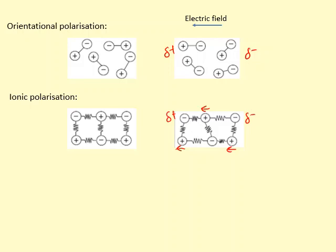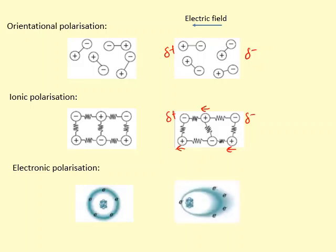Another one is electronic polarization. The electrons within the atoms can also shift as well. So you can see here the electrons have moved in the opposite direction to the electric field and made this part of the atom negative and this part partially positive.